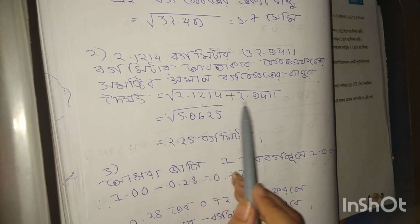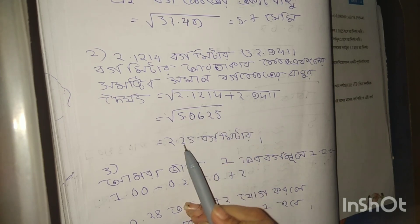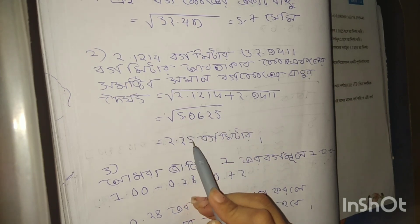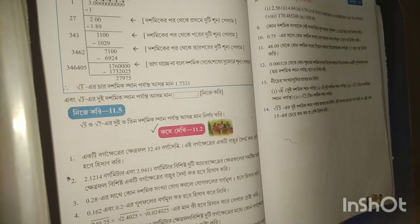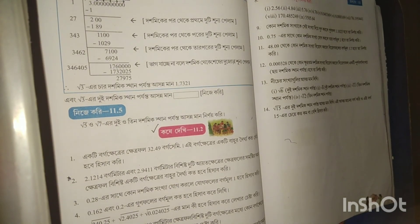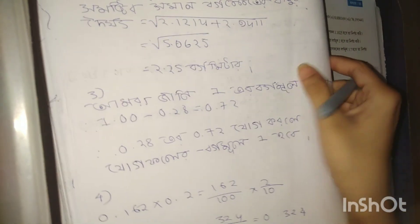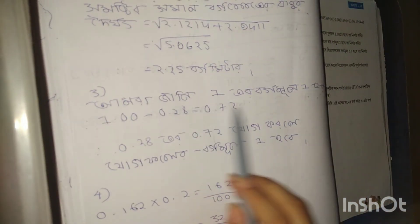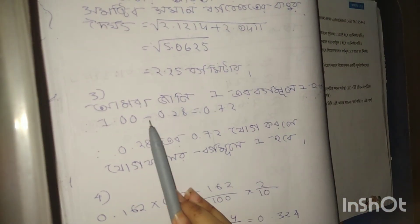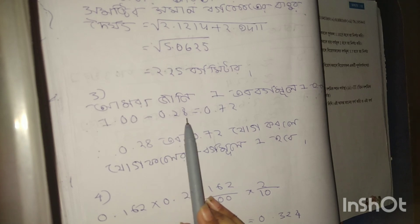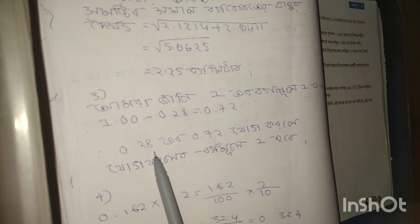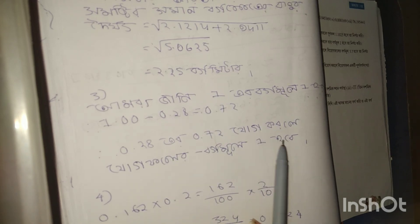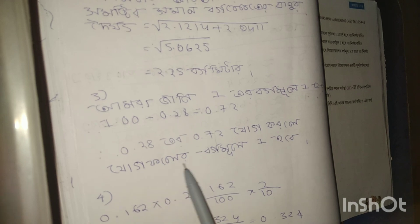The 2.2214 is very important. The add is 2.2214. 3.2214 is very important, we have to add the add. 1.00 minus 0.28 equals 0.72; 0.28 to 0.72 is the add.